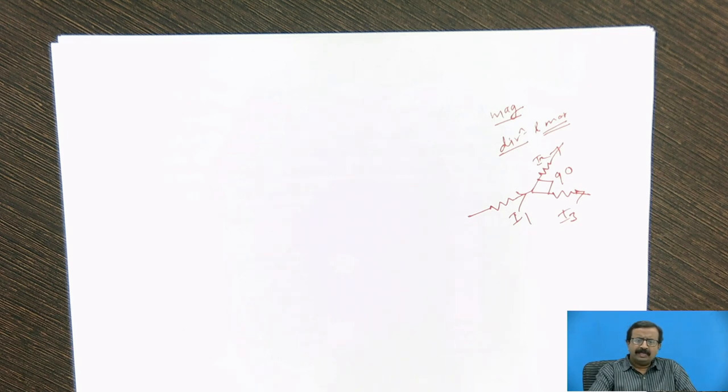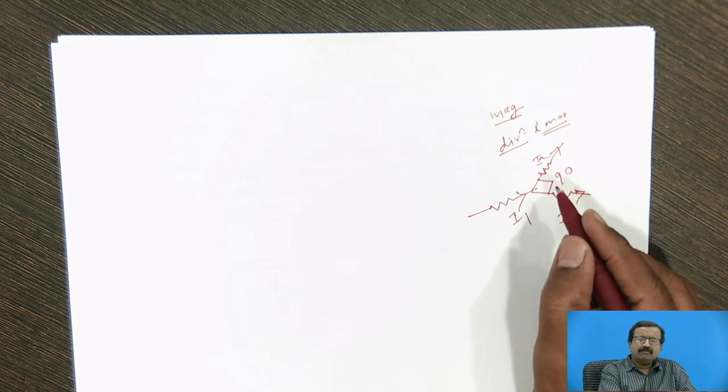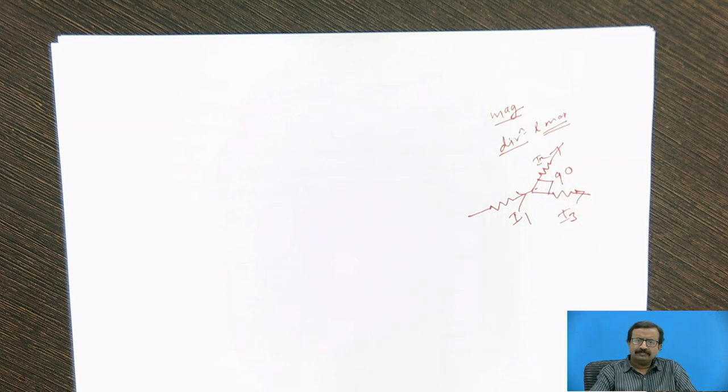and if I change the angle from 90 to 45 degrees, will there be any change in the output? Then the students say no, still i1 is equal to i2 plus i3, means current has got direction as well as magnitude, but it is not a vector.